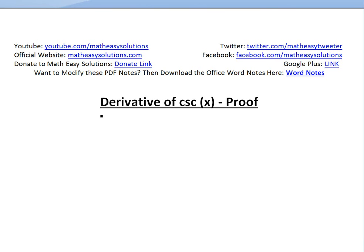You can see all those in the video links below in the related videos. Cosecant of x, that's how you would pronounce it, is equal to 1 over sine of x.